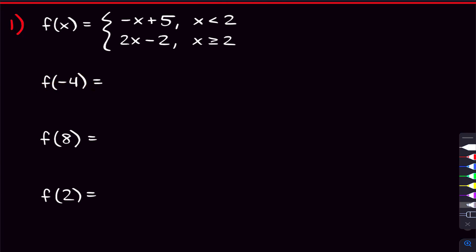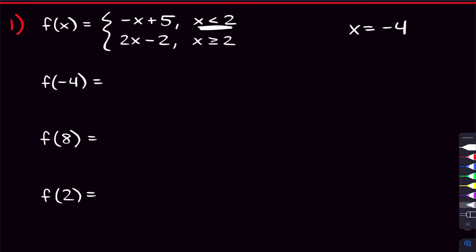For f of negative four, we can see that we have negative four plugged in for x, which means we're looking at where x equals negative four. Let's look at the piecewise function and see which condition that matches up with, because that'll tell us which function we're going to be plugging into. Looking at the first condition — x is negative four, and negative four is indeed less than two. So right away, we found the function that works.